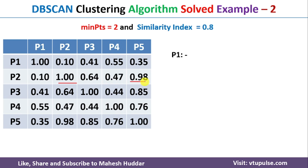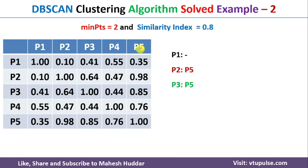Coming back to the next point, P5 is the only value where the similarity index is more than 0.8 for P2, so P2 is similar to P5. For P3, apart from P3 itself, we have one value of 0.85 which is more than 0.8 — that value is for P5. So for P3, P5 is the similar point.